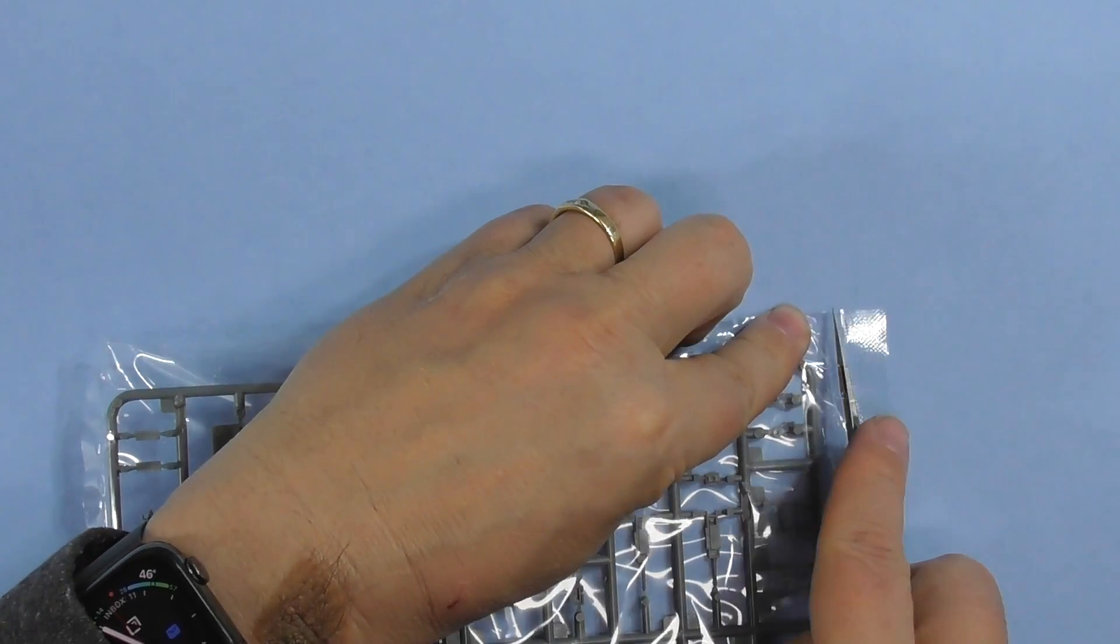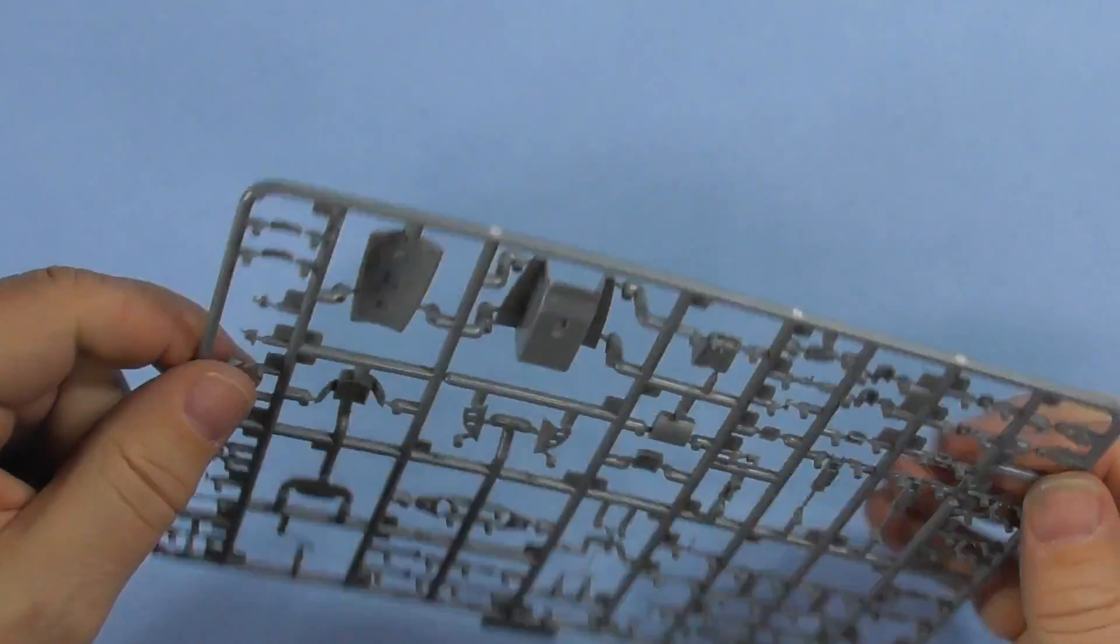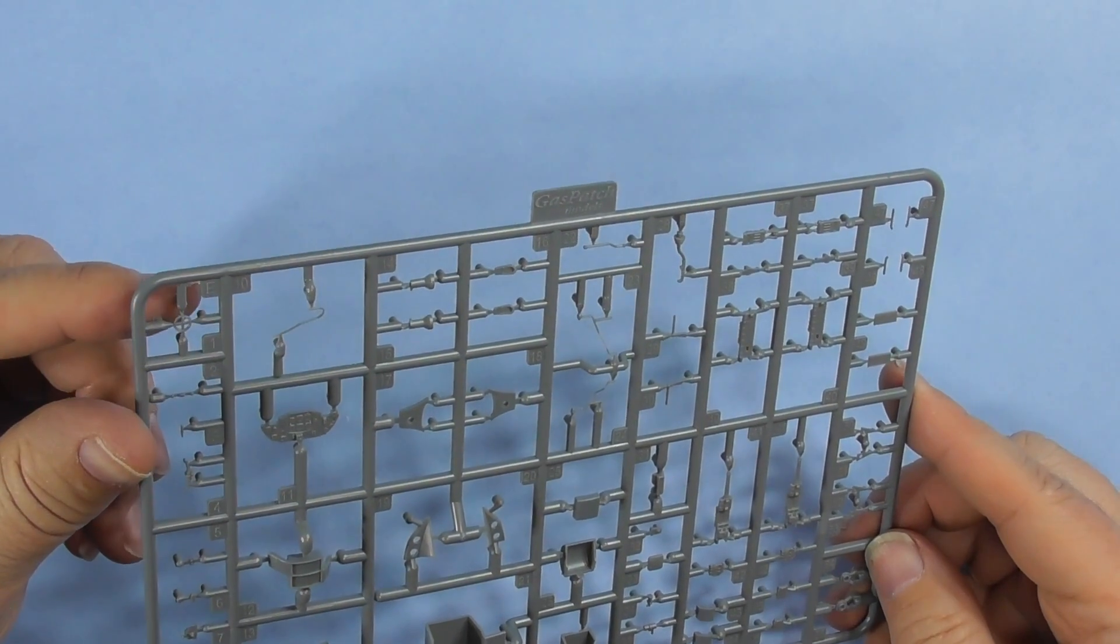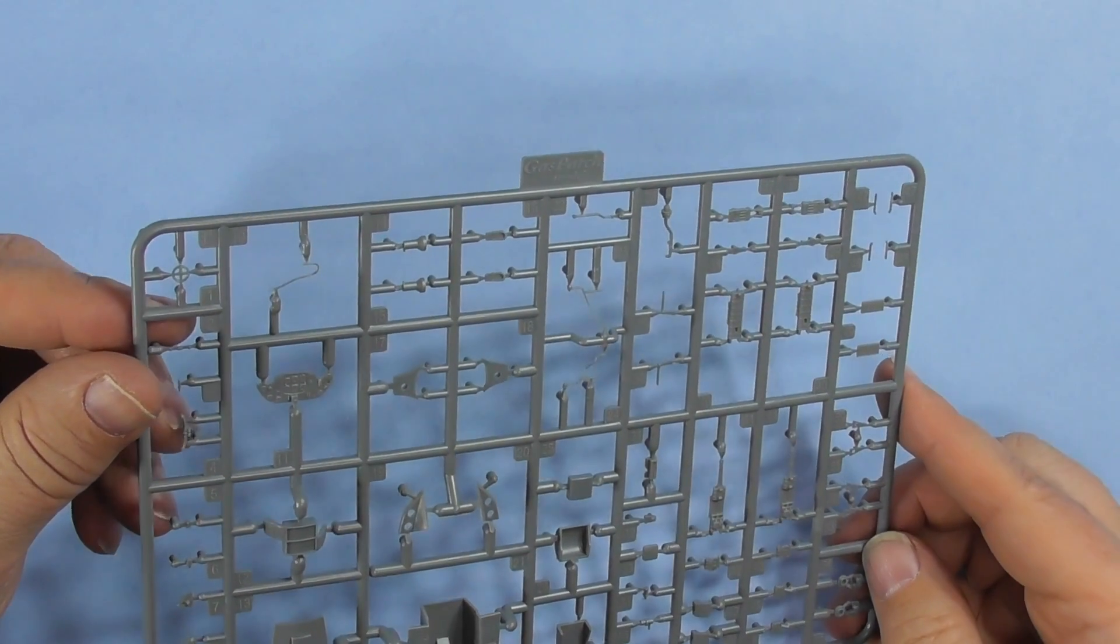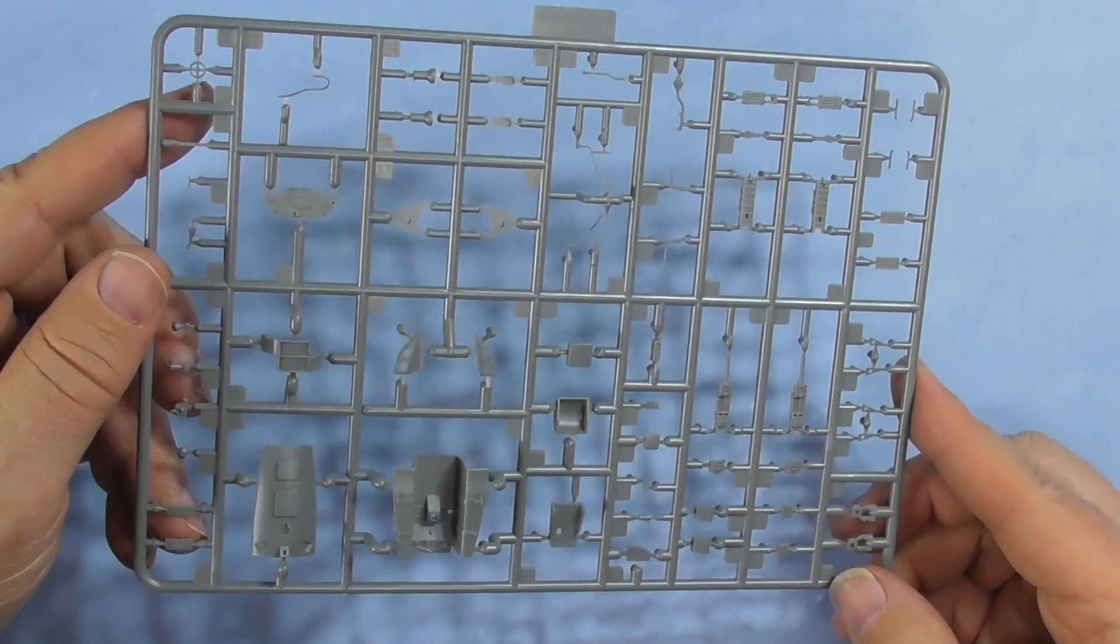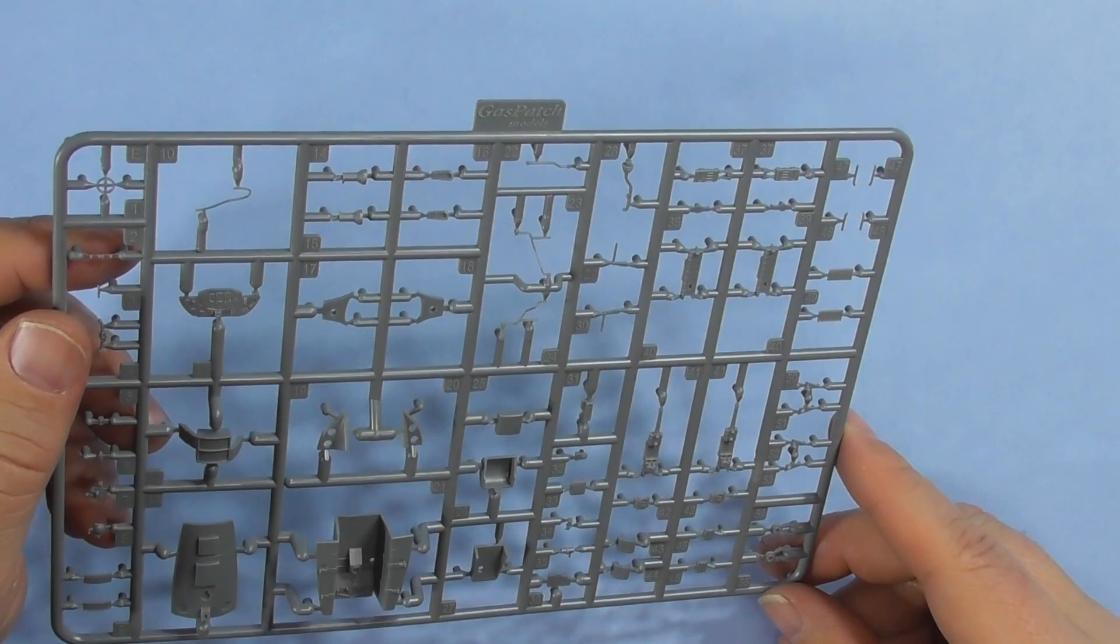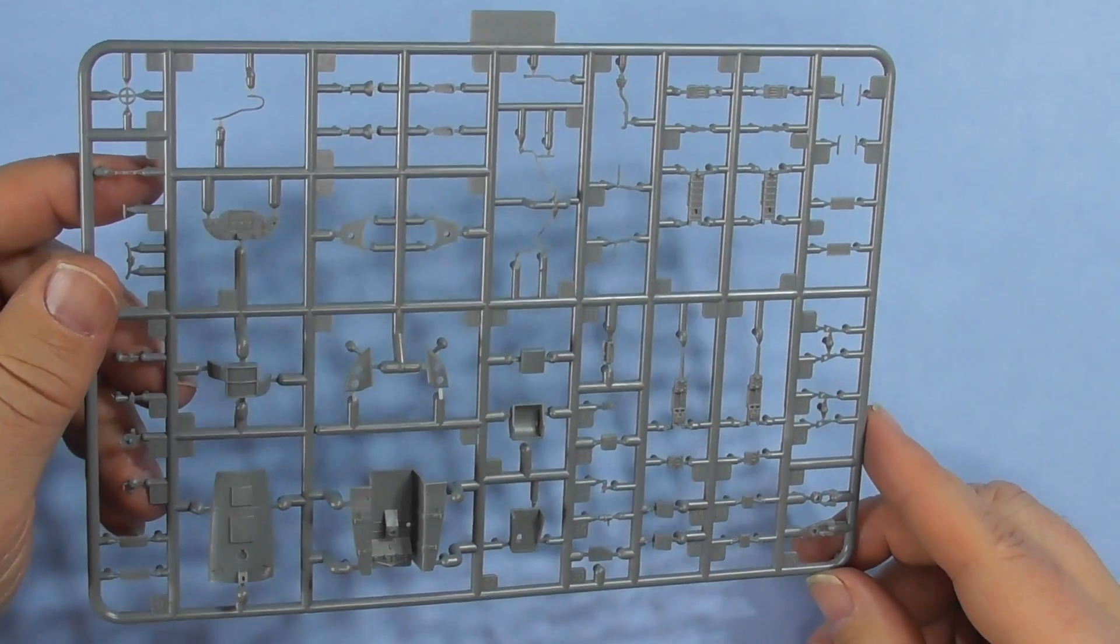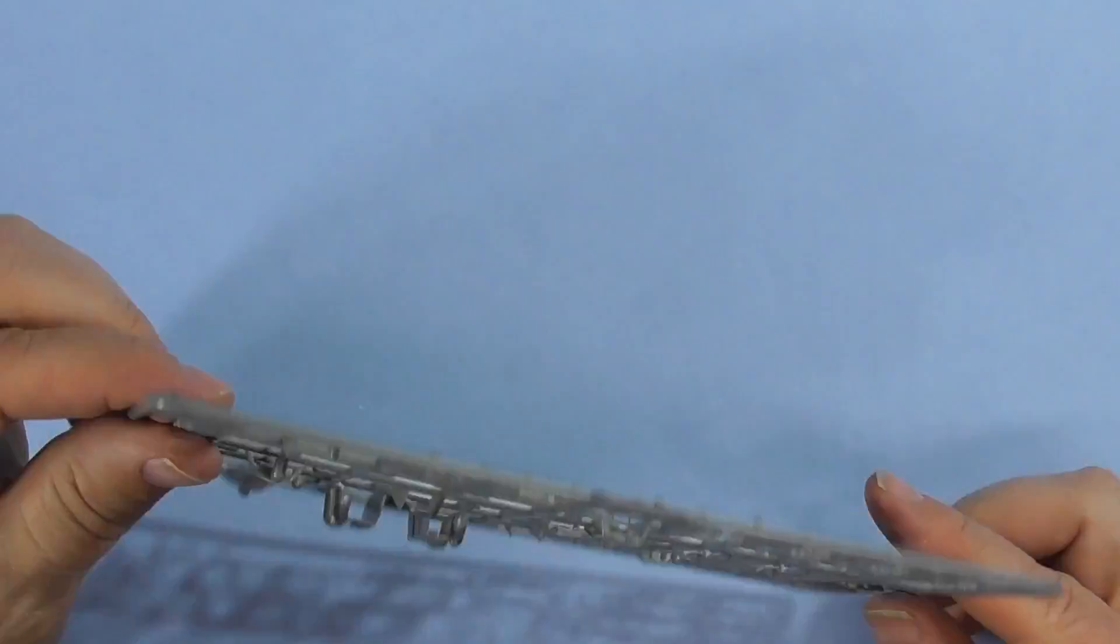And we got one more which should have all the cockpit parts in it, and it does. Nice cockpit tub, instrument panel, looks like various control parts that are very tiny. Those actually look like shell casings. Your gun, your throttle, your control stick. All very small but very detailed parts.